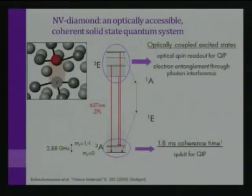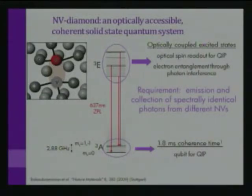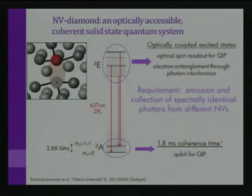We can also create electron entanglement through the photon interference protocol I described. For that protocol to work there are stringent requirements — one is that the emission from two different NV centers needs to be spectrally identical. This is a strong statement and very difficult to realize in solid-state systems. So let's look at the spectral properties of the nitrogen vacancy center in diamond.